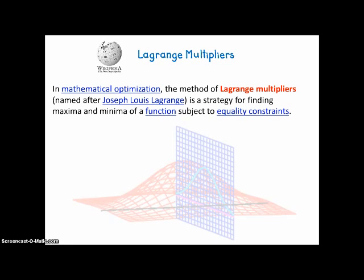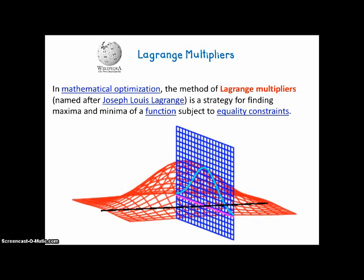For example, the red surface has a maximum at the top of that red hill. But if we want to know the maximum constrained to the blue plane, that's another matter entirely — the maximum of the surface on the blue plane is different.